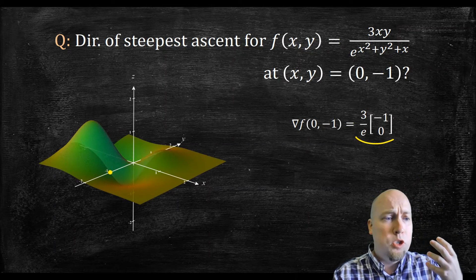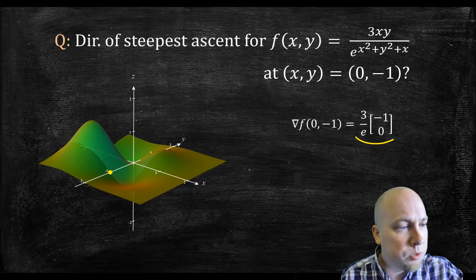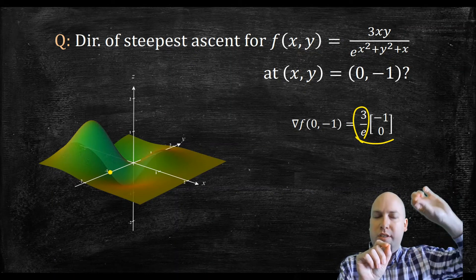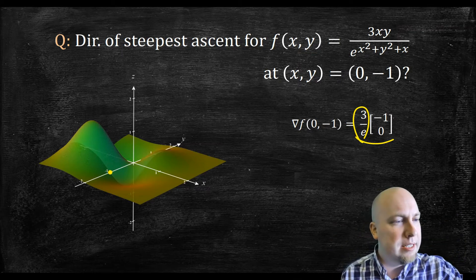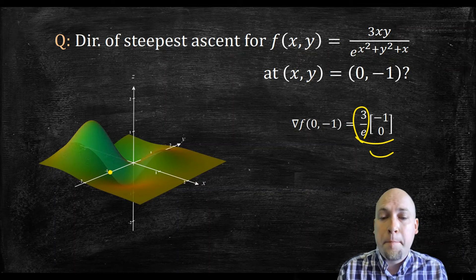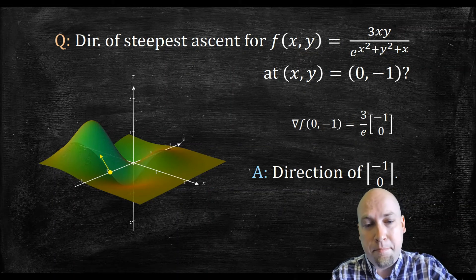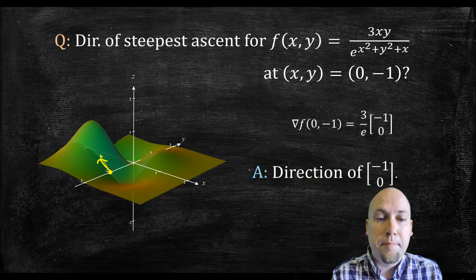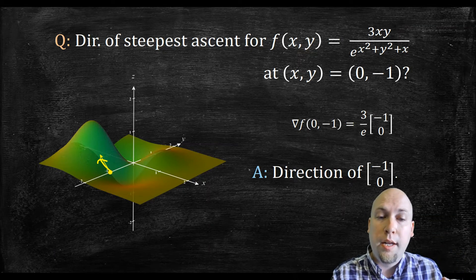Because I only care about the direction of the gradient, I don't care about how long it is. The factor 3 over e is just a positive number — it only determines the length of the gradient. So it's equivalent to say the gradient is pointing in the direction of (-1, 0), and that is the direction of steepest ascent. I'll draw that on the picture: the direction is minus 1 in the x direction and 0 in the y direction. So if you want to go up that hill as quickly as possible, that's the direction you should walk.